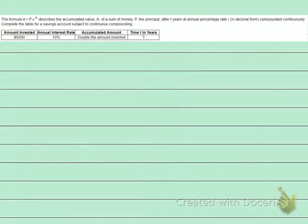This problem is working with money, and it is an interest problem, continuously compounded. They give us the formula here, the formula A equals PE to the RT, and that describes the accumulated value A of a sum of money, which is the principal P, after T years, at an annual percentage rate R.